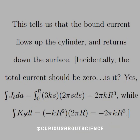Moving forward, this tells us that the bound current flows up the cylinder and returns down the surface. Incidentally, the total current should be zero — and it is — because if we do the integrals, the volume integral over dA and the surface integral over dL are equal but opposite. So we have a good check there, and our physical intuition is keeping in line.